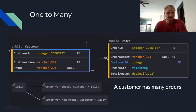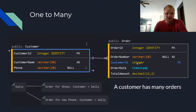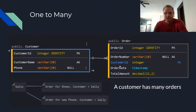So here we have Sally. Sally would be a customer and her customer ID would be one, and her name is Sally. Her phone number would be whatever her phone is, and she has two orders connected to her through the customer ID. She has an order for shoes — let's say order number 50 — and an order for a new phone, order number 100, with customer ID of one. These orders also have an order date and a total amount on them.